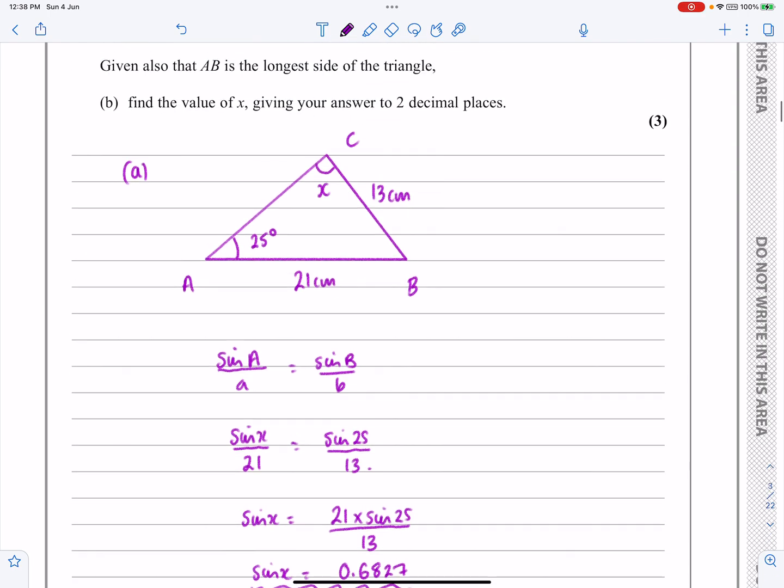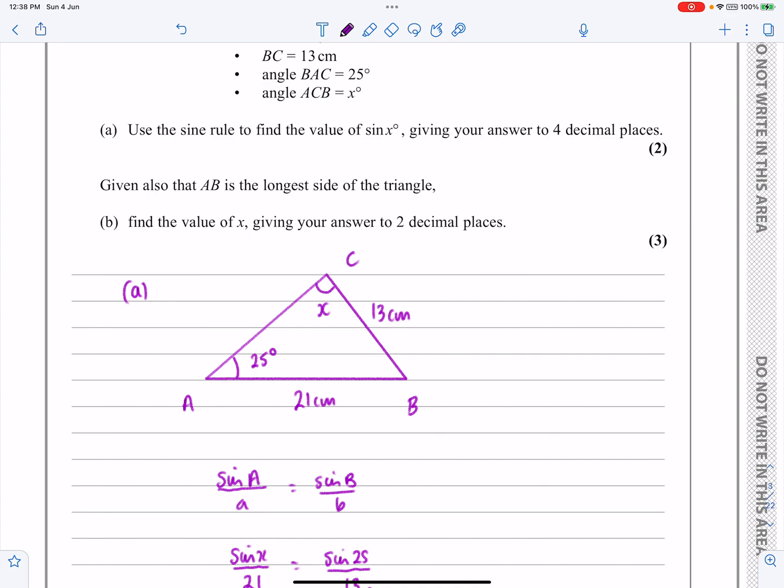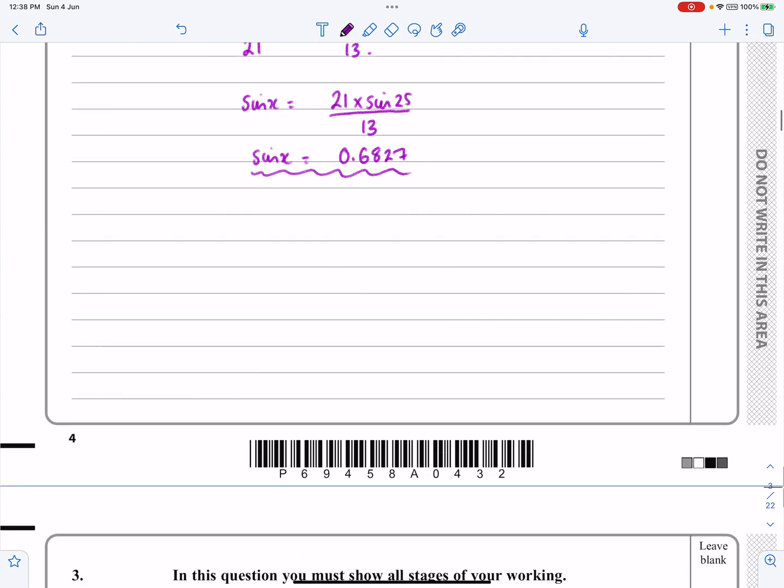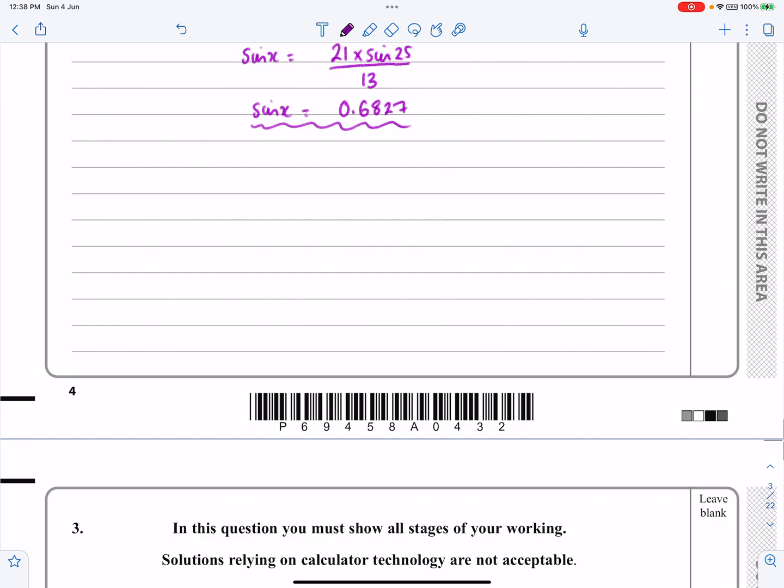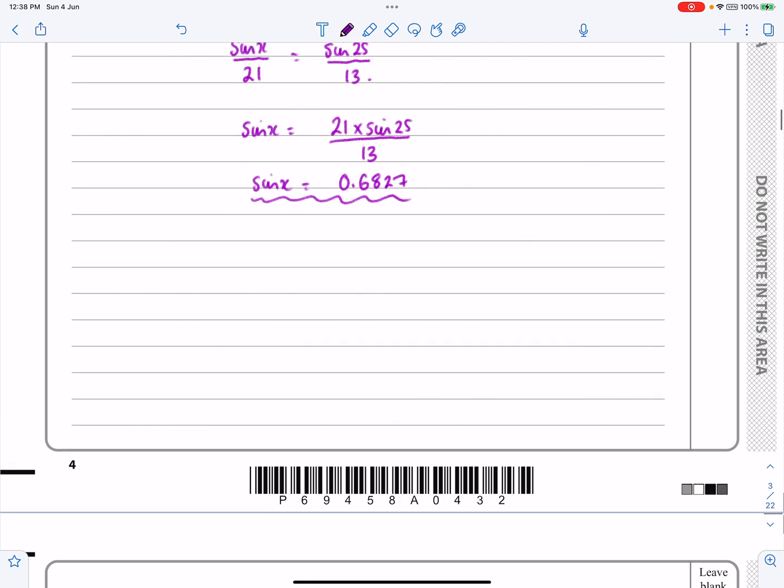So what does part B say? Part B says find the value of X giving your answer to two decimal places, if we know that AB is the longest side of the triangle. So let's just spend a couple of seconds before we do anything else explaining what that means. You should all know, this should be something that you've been taught already, that we've got this sort of idea here where we could have a situation where sin X equaling to an angle.